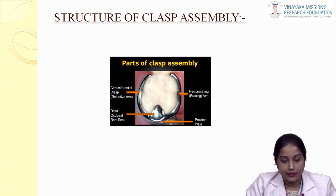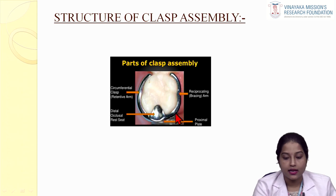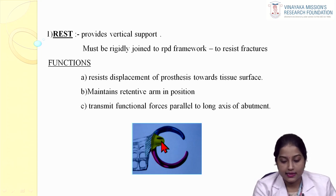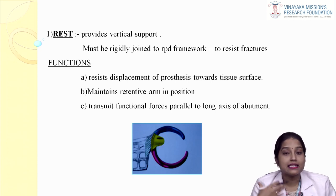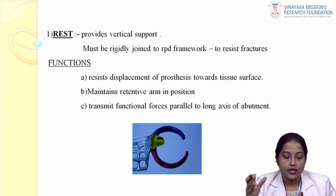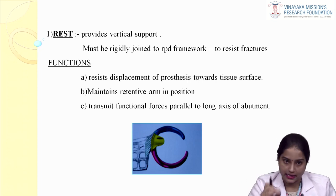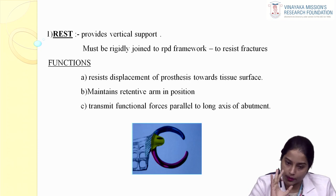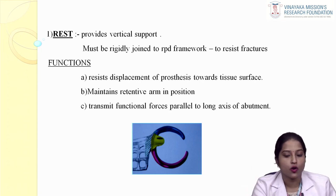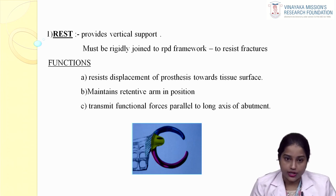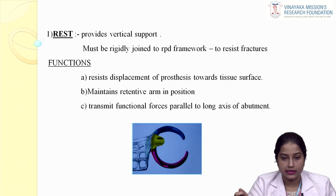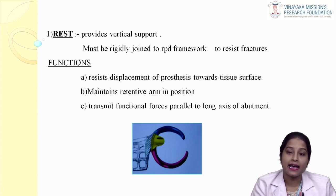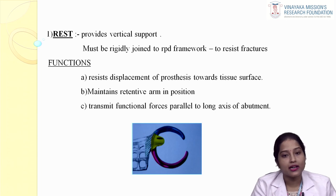Coming to the structure of a clasp assembly, it has four components: a retentive arm, a rest, a reciprocal arm, and a minor connector. The rest provides vertical support — that is, resistance towards tissue-ward movement. It has to be rigidly joined to the RPD framework to resist fracture. Other functions of the rest include maintaining the retentive arm in its position, thereby enhancing retention, and transmitting functional forces parallel to the long axis of the abutment.